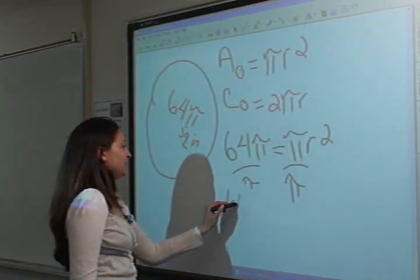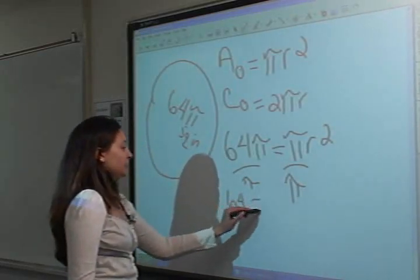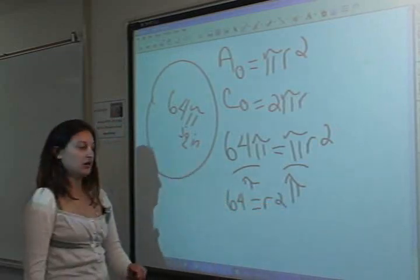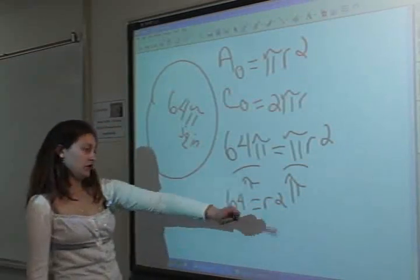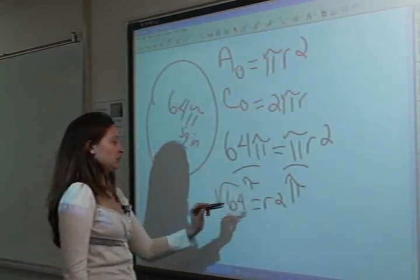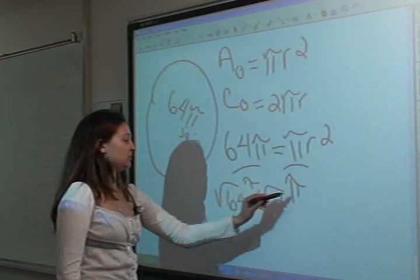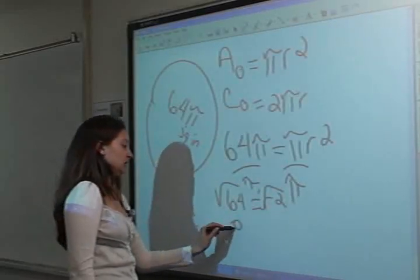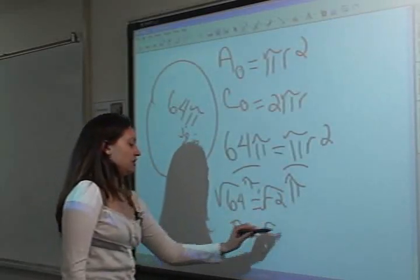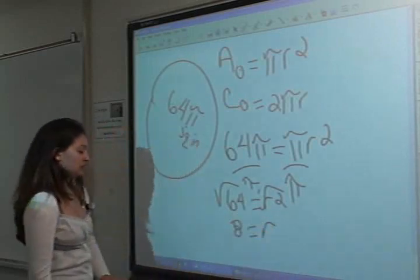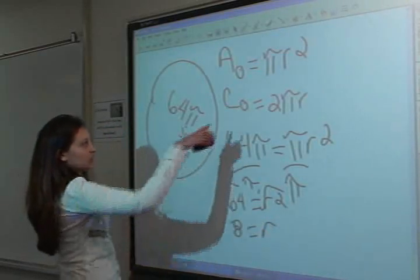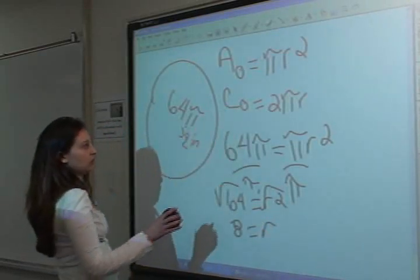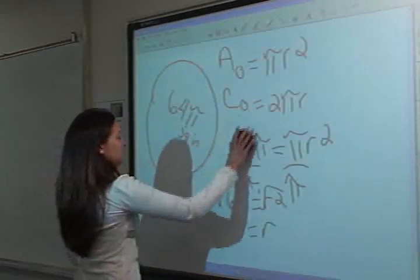So we end up with 64 equals radius squared. You guys all know how to get rid of a square — we take the square root of both sides. The square root of 64 is 8, and we are left with r. So 8 is our radius. Don't forget, radius equals 8.